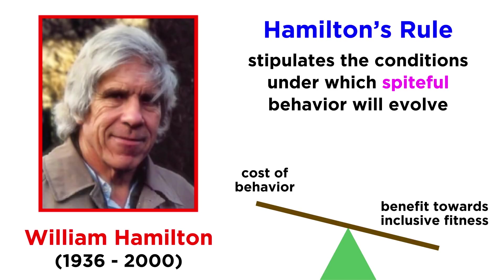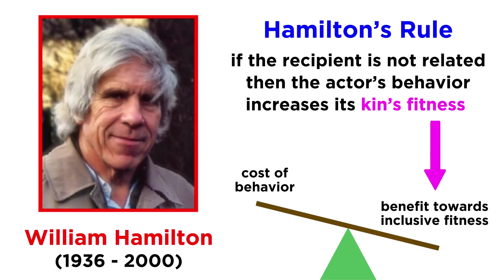Just as with altruism, Hamilton's rule can apply to spite. If the recipient is less genetically similar to the actor, then the actor that impedes the recipient in some way will have its alleles increase in the population, which increases the fitness of the actor's kin.